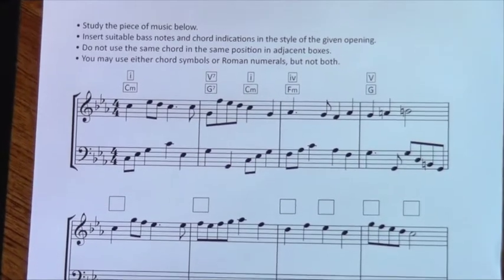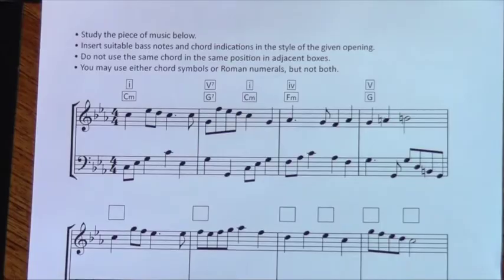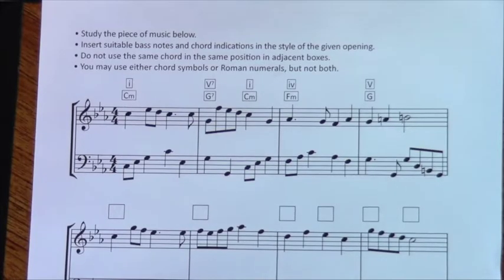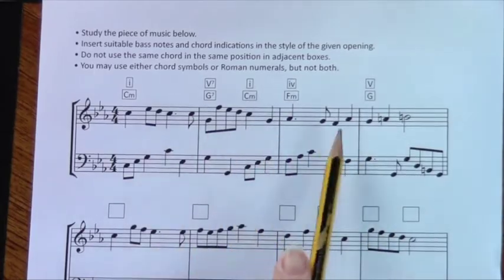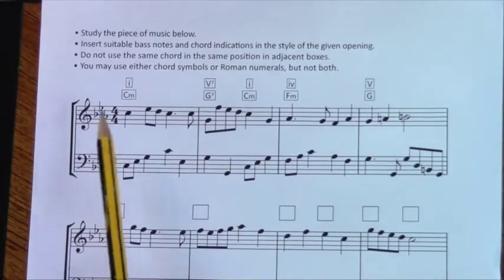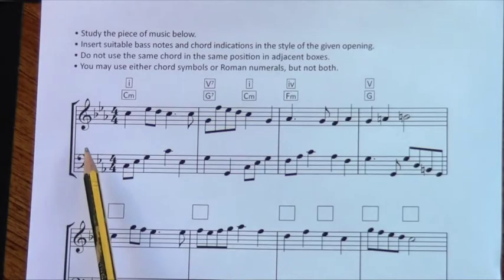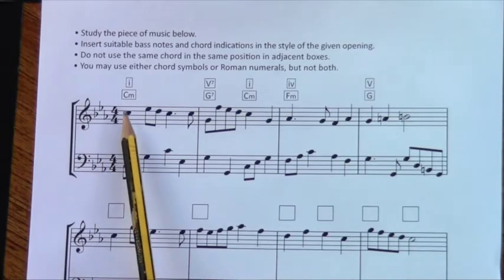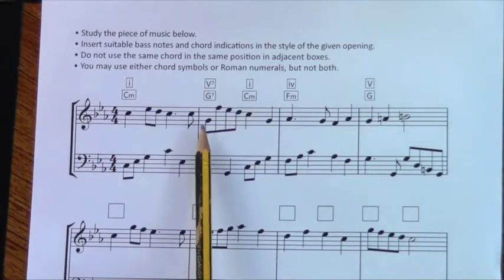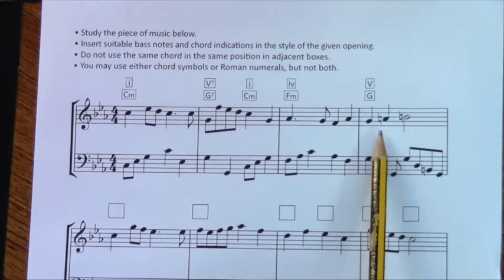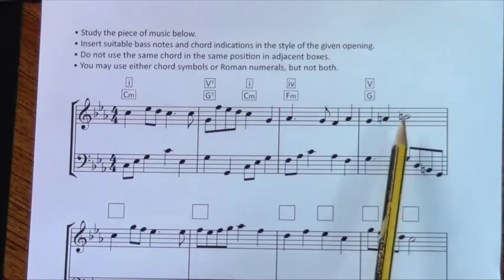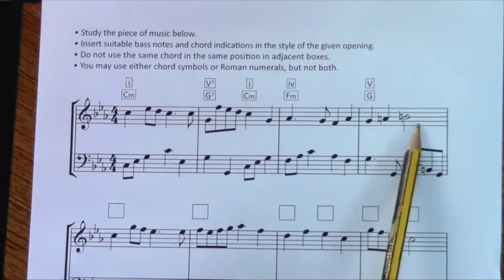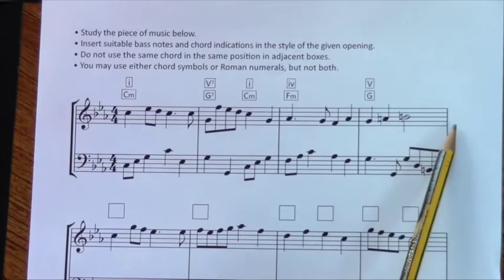The first thing we need to do is mark in our cadence points. Normally they're after every four bars, so we count one, two, three, four. This piece has no upbeat, so we start with bar one here. Normally the cadence points are after four bars. There might be a rest or a long note to identify a cadence point — like this minim, which is a long note. This might be identifying a cadence point.